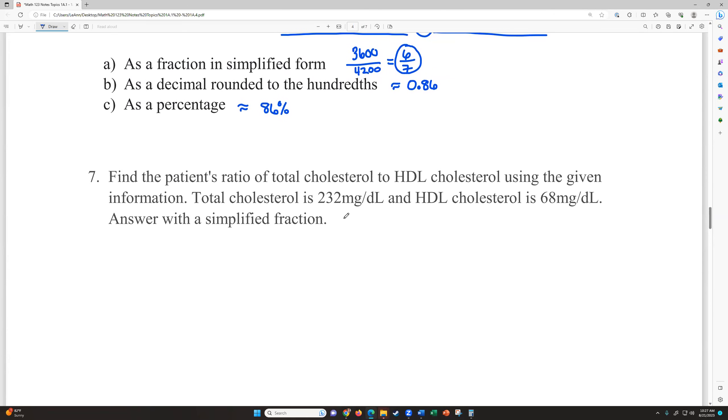Find the patient's ratio of total cholesterol to HDL cholesterol. So total to HDL using the given information, total cholesterol is A, 232 milligrams per deciliter. HDL cholesterol is 68. So that's B. And we just want to write this one as a simplified fraction. So notice it's not always the smaller number on top. So total cholesterol was 232 and HDL cholesterol is 68, A to B. And then we want to see if that reduces. So I'm putting it into my fraction button on my calculator, 232 fraction button, 68, hit enter. It does reduce down to 58 over 17. So it looks like they were both divisible by four.